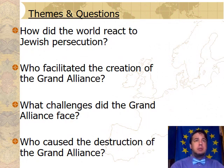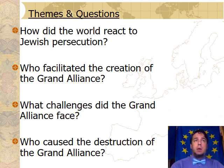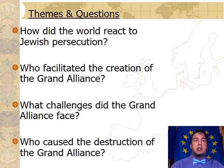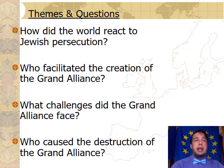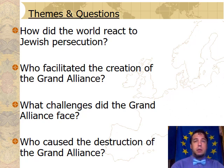The major themes we'll be looking at with today's lecture will revolve around the following four questions. Number one, how did the world react to Jewish persecution? Number two, who facilitated the creation of the Grand Alliance? Number three, what challenges did the Grand Alliance face in taking on the Axis powers? Number four, who caused the destruction of the Grand Alliance of World War II?